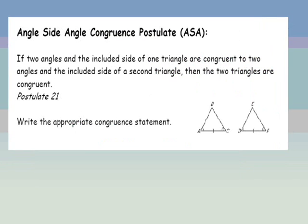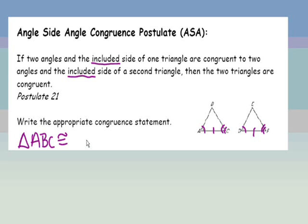The angle-side-angle congruence postulate: if two angles and the included side of one triangle are congruent to two angles and the included side of a second triangle, then the two triangles are congruent. I have an angle congruent to an angle, a second angle congruent to a second angle, and the side in between them — the included side — which means I have angle-side-angle. So triangle ABC is congruent to triangle DEF, and my reason would be angle-side-angle congruence in a proof.